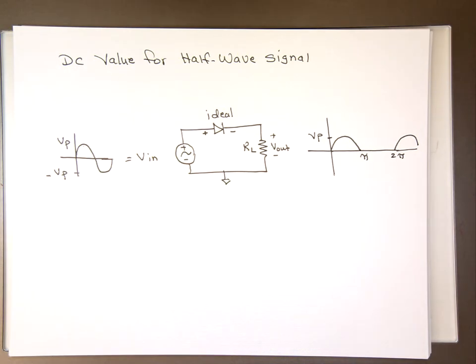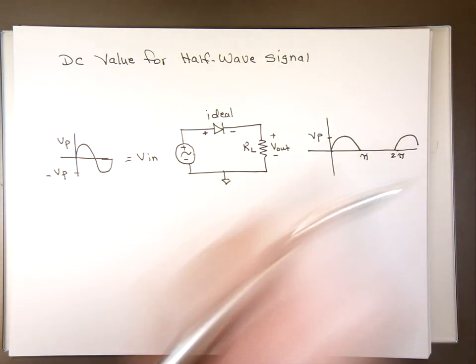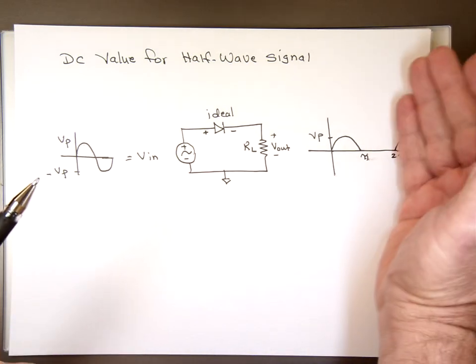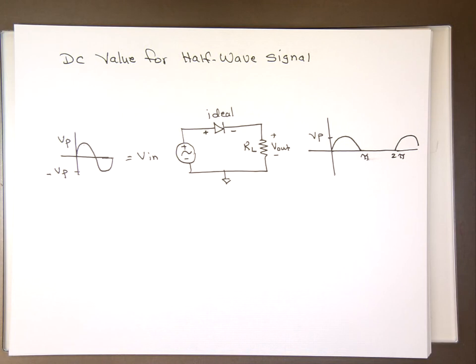The question now, what DC value, what average value will give me the same result as this one? What does that mean the same result?